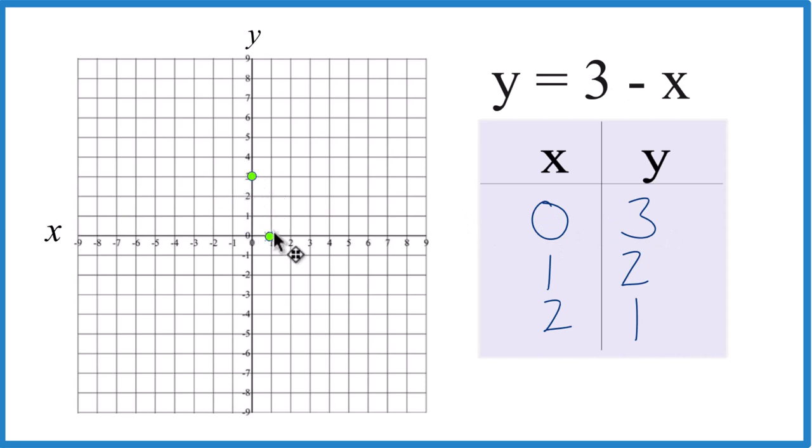Then we have x is 1, and y is 2. And our last point, x is 2, y is 1. You can see the line there. Let's put a line through that.